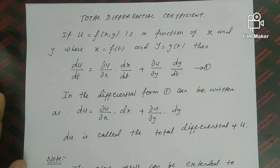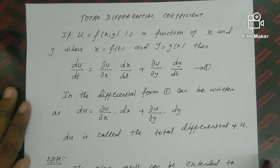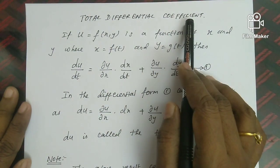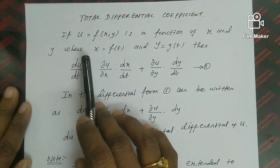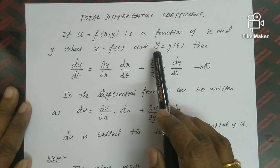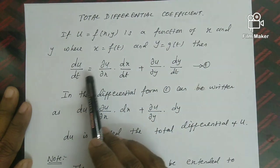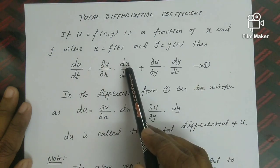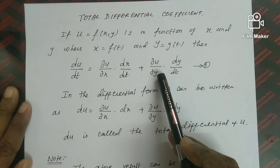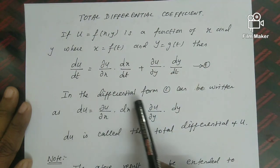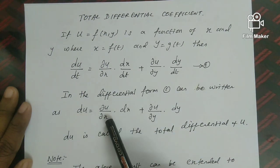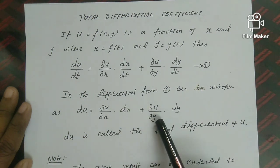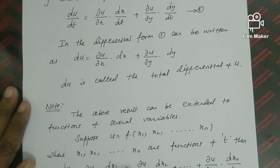Welcome to the lecture series on functions of several variables and total differential coefficients. If u equals f of x comma y is a function of x and y, where x equals f of t and y equals g of t, then du by dt equals partial u by partial x into dx by dt plus partial u by partial y into dy by dt. In differential form, this can be written as du equals partial u by partial x into dx plus partial u by partial y into dy. Du is called the total differential of u.